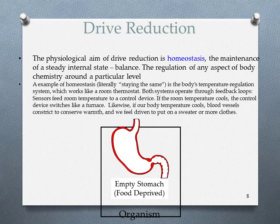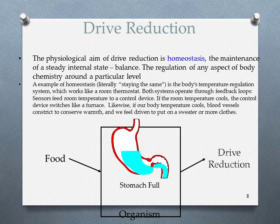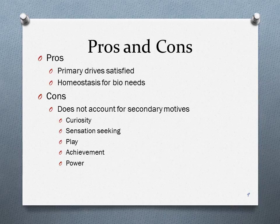The pros of drive reduction theory: primary drives are satisfied and homeostasis addresses biological needs. The bad thing is it does not account for secondary motives — it doesn't explain money, achievement, power, why we enjoy playing a sport, or curiosity. Yes, it explains why we enjoy eating or why we're attracted to certain people, but it doesn't account for why we do things to achieve, make money, or gain power — those are secondary motives.